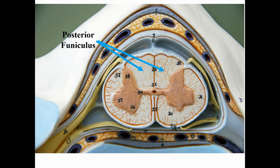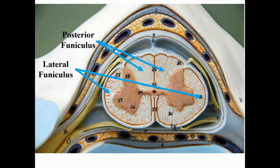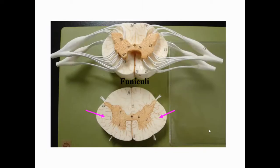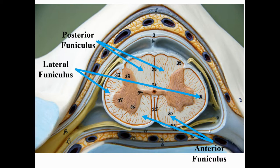There's also white matter around the outside, divided into columns. The Latin word for column is funiculus, so these are called funiculi. There are two posterior funiculi, two anterior funiculi, and two lateral funiculi — you can see all three pairs in this picture.